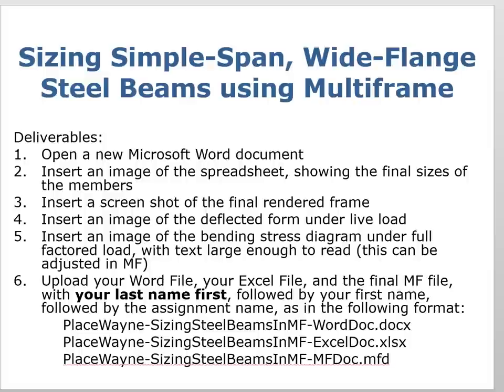The screenshot should include a legend that tells us, based on color, what all the sections are. Then you'll insert an image of the deflected form under live load, and an image of the bending stress diagram under full factored load. All of that should be presented with text large enough to be readable. Then you're going to upload your Word file, your Excel file, and your multi-frame file.